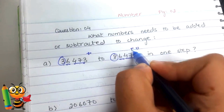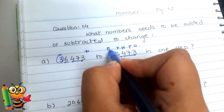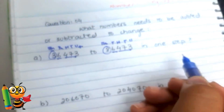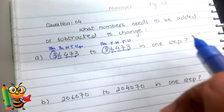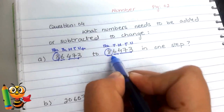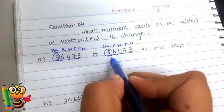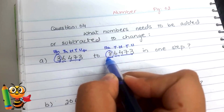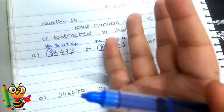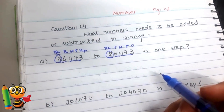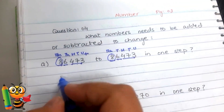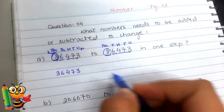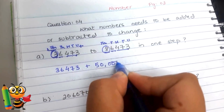Similarly: ten-thousands, thousands, hundreds, tens, and units. Be careful to assign the correct place values. The difference is at the ten-thousands place — we need to figure out what to add to 3 to make it 8. Count: 4, 5, 6, 7, 8 — that's a difference of 5. Since this digit is in the ten-thousands place, we are going to add 50,000 to 36473 to make it 86473.